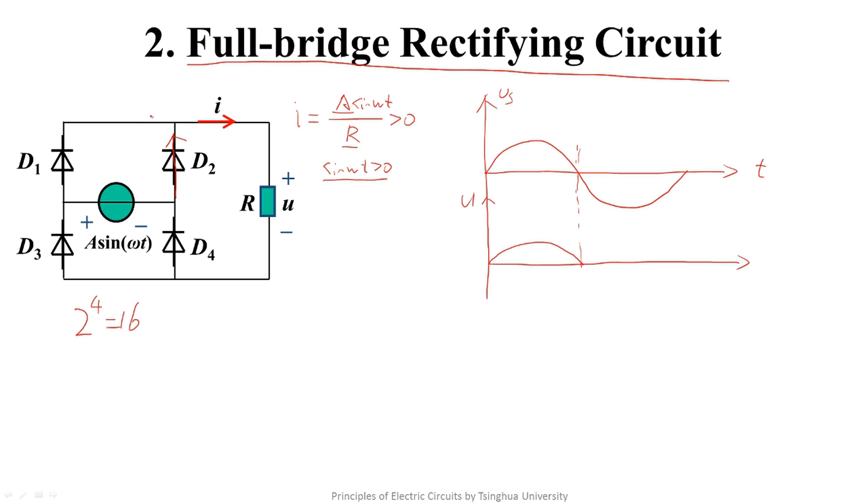Similarly, it can't flow to the left because D1 can't flow the reverse current. This is not possible. So it must flow to this side. The current is greater than zero and flows through the resistor.